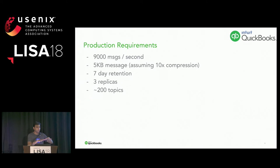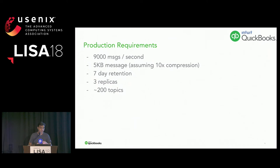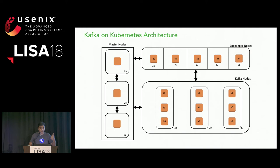We went to our other engineering teams to figure out what the requirements really were. The inputs we got: 9,000 messages per second, each message about 50 kilobytes in size. Given Kafka's compression, there would be 10x compression, so each message on disk would be about 5 kilobytes. Seven-day retention period, three replicas, about 200 topics. For E2E latency, the teams said if it's less than 100 milliseconds, we are good. We were already at 35, but we needed to factor these in and design an architecture to support them.